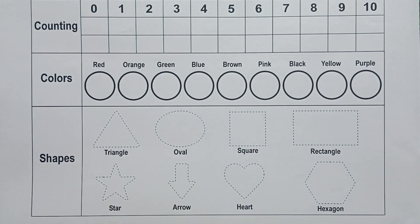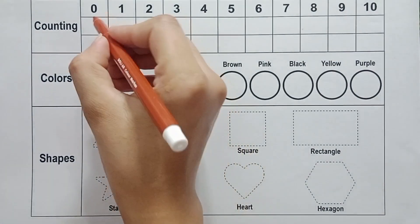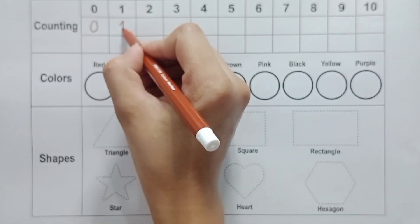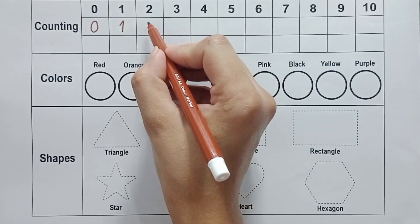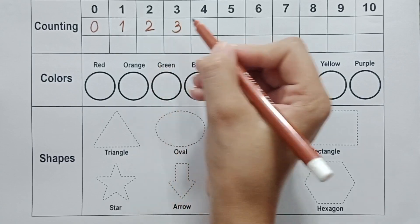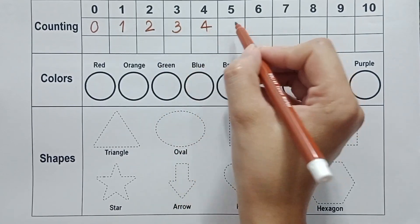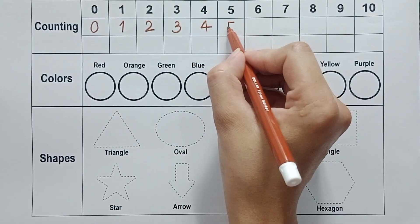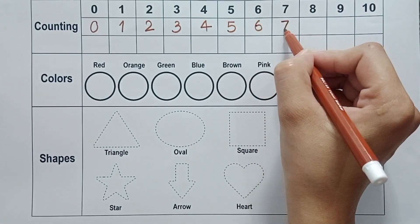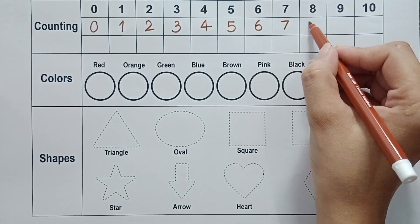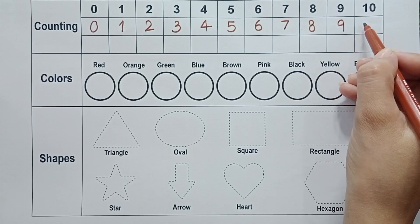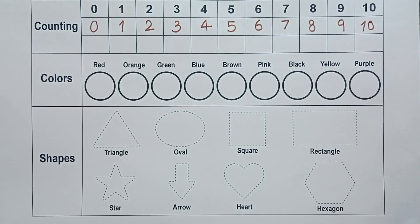Let's start writing. 0, 1, 2, 3, 4, 5, 6, 7, 8, 9, 10.